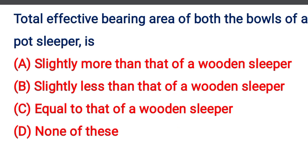Next question: Total effective bearing area of both the bowels of the pot sleeper is — Option A: slightly more than that of the wooden sleeper, Option B: slightly less than that of the wooden sleeper, Option C: equal to that of the wooden sleeper, Option D: None of the above. The correct answer is Option C: equal to that of the wooden sleeper.